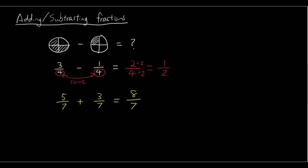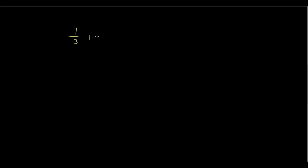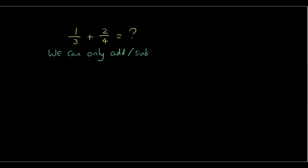Now let's do an example where the denominator is different. Let's try one out of three plus two out of four. This will require you to use the concept we taught in the last lesson — equivalent fractions — because we can only add or subtract fractions when the denominators are the same.